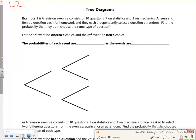So we've got 10 questions, 7 on stats, 3 on mechanics. Anissa and Ben do a question each for homework and they each independently select a question at random. Find the probability that they both choose the same type of question.